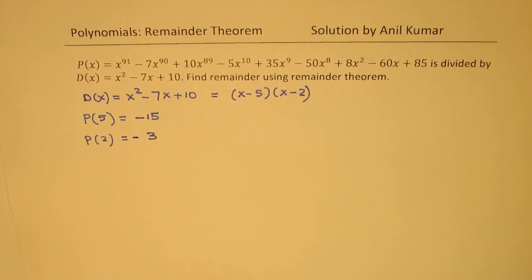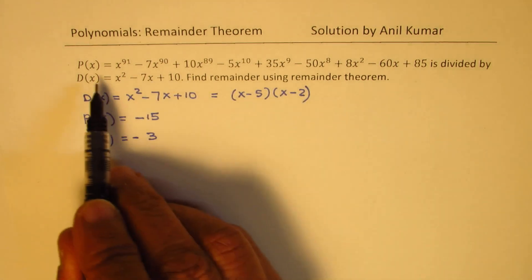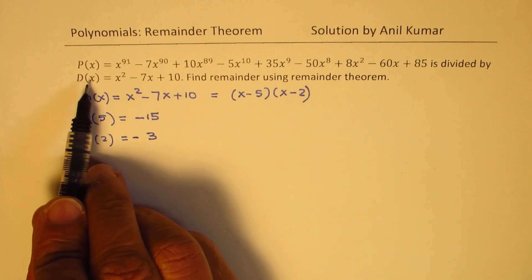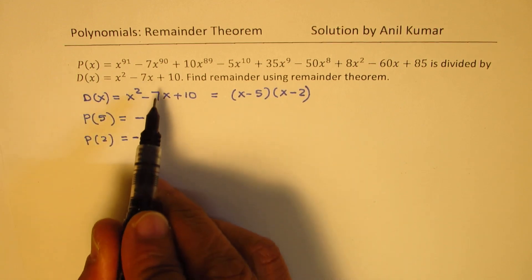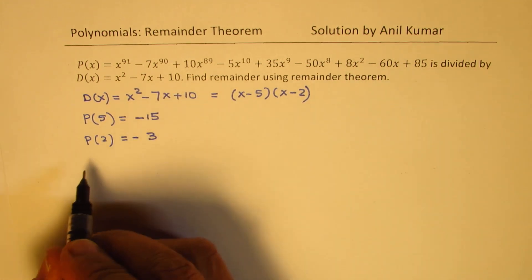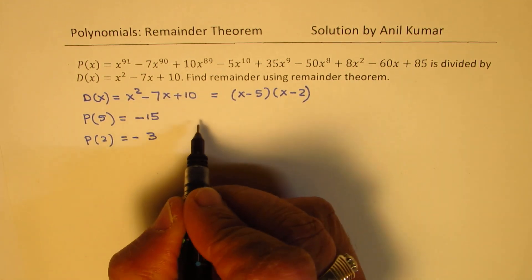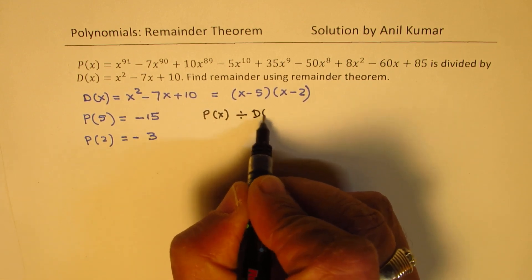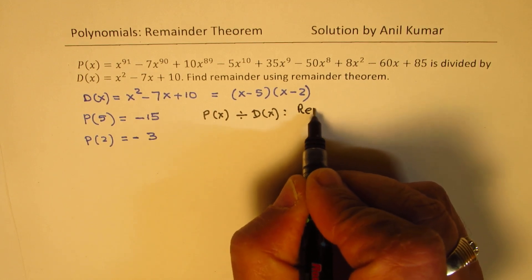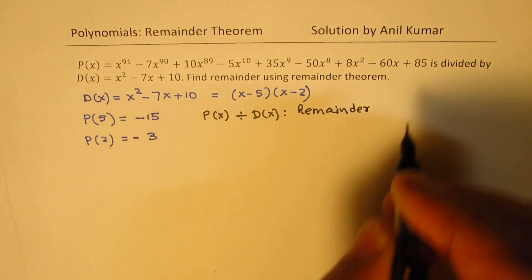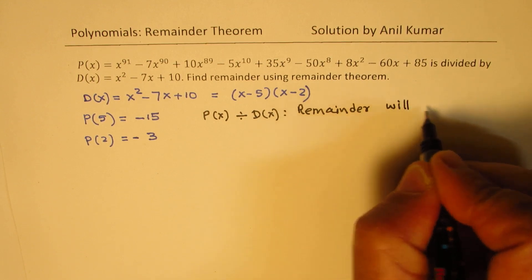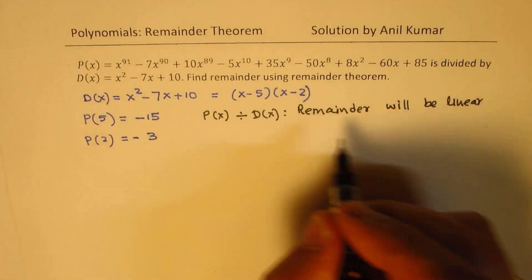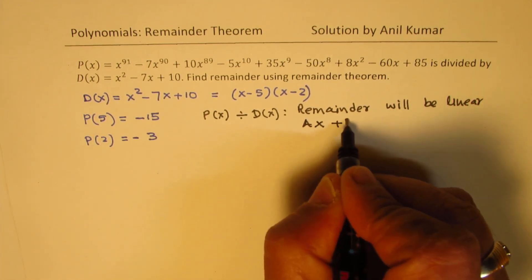Now here is a very important step. We can actually write the polynomial. Now when you divide by a quadratic function, then remainder will be a linear remainder. So whenever you do, important thing to notice, whenever you divide by the divisor, in that case, remainder will be linear. Since the divisor is quadratic, so let it be Ax plus B.